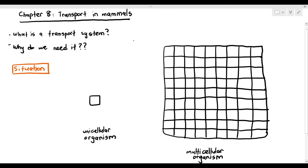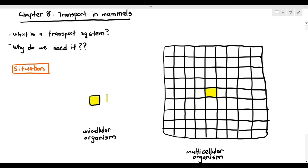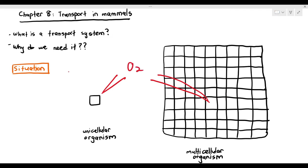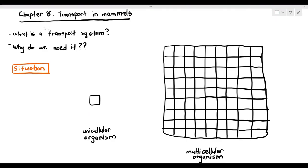In the two-dimensional view, the unicellular organism is on the left and for the multicellular organism I've highlighted a particular cell in the middle in yellow. Let's assume that both these cells require the same type of substances to survive — for example, both may require oxygen to carry out aerobic respiration. I'm going to represent oxygen as little dots, and for the unicellular organism the oxygen can just basically diffuse into the cell very easily.